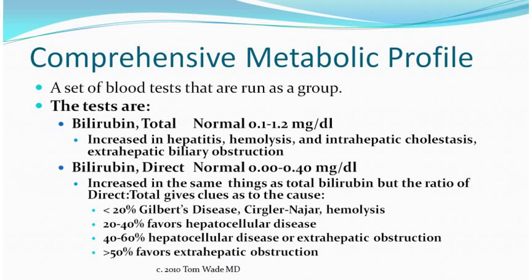The total bilirubin can be increased in hepatitis, hemolytic anemia, and in blockage of the bile ducts — either the bile ducts within the liver or within the bile duct that drains the gallbladder and the liver — that's what we mean when we say cholestasis or biliary obstruction. The direct bilirubin is increased in the same things as the total bilirubin, but the ratio of direct to total gives us clues as to the causes. One of the most common causes of a mildly elevated total bilirubin found on a routine CMP is a syndrome called Gilbert's disease. Although it's called a disease, it's common and it doesn't cause any liver damage or any health damage.